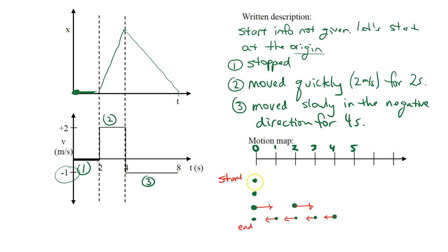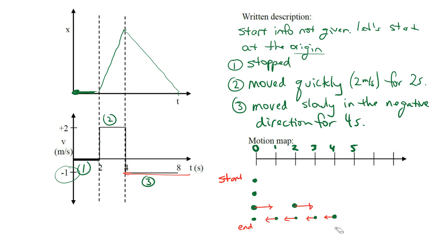For the motion map, I start at the origin and the first thing is to wait for two seconds. So one second goes by, two seconds goes by, then it starts moving at two meters per second — two meters every second — so it goes to two, then to four. At four we change directions and start moving in the negative direction at one meter per second: three, then two, then one, for four seconds — four jumps total. If we start at the origin, we also end at the origin.